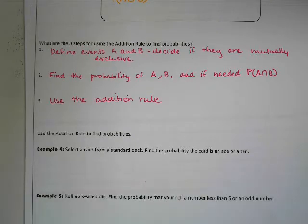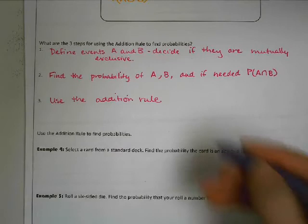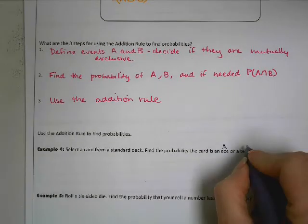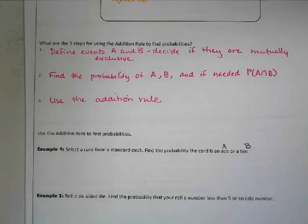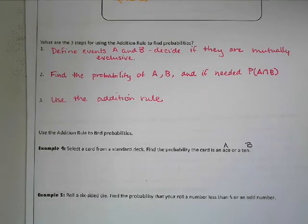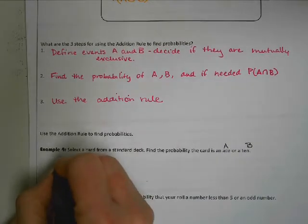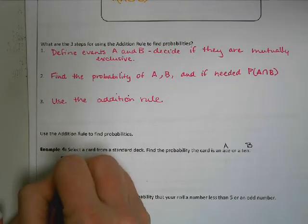But we're going to define our two events. So we'll say that just for the purposes of keeping them in the order that they're in, that this is going to be event A, it's an ace. And event B will be that it's a 10. Are these two things mutually exclusive? Yes, they're exclusive, which means that this is an easy problem because all I have to do is find the probability of A.